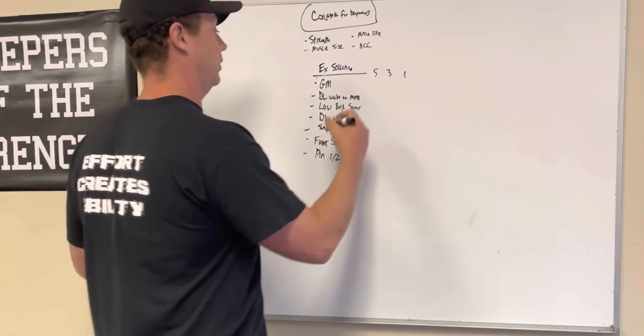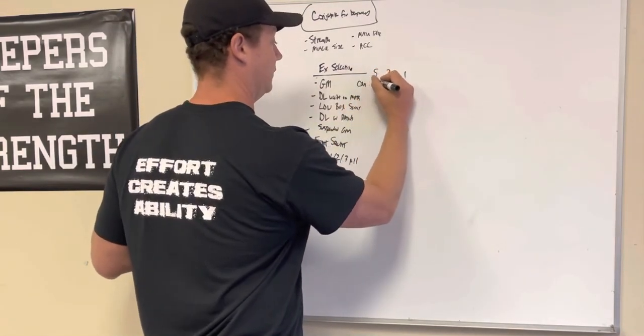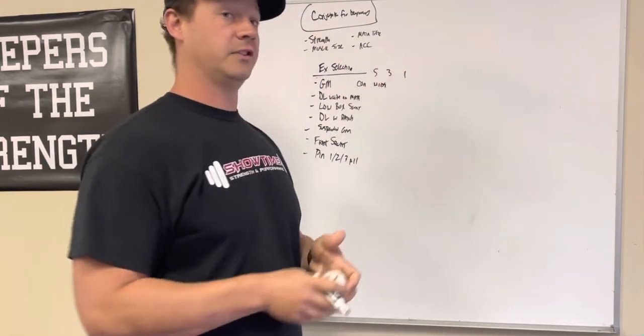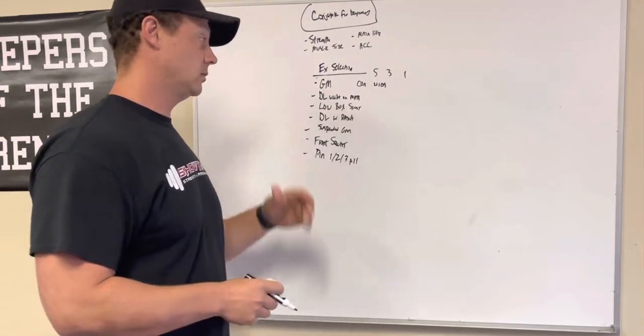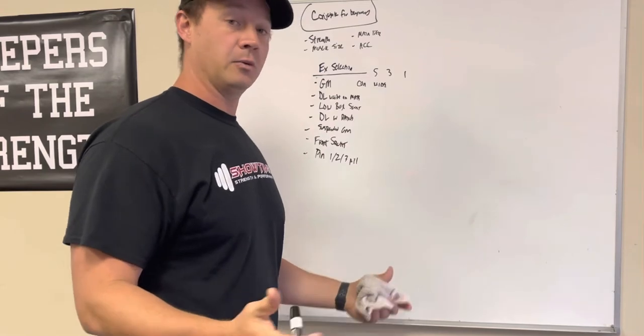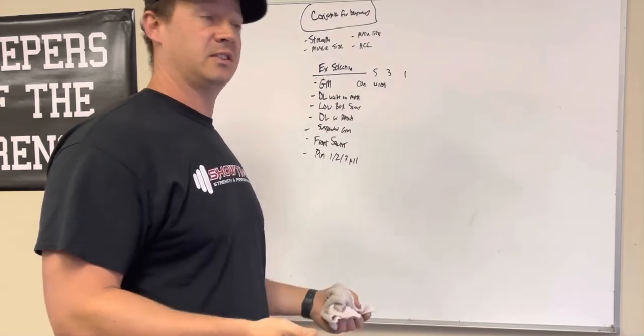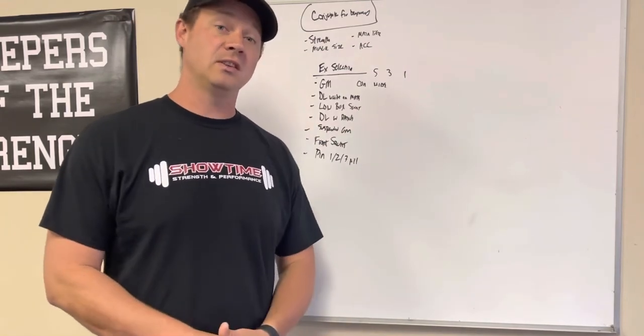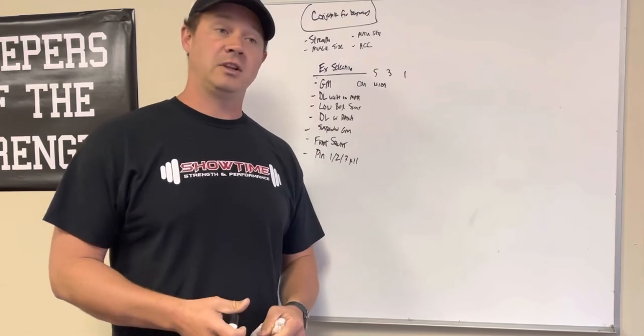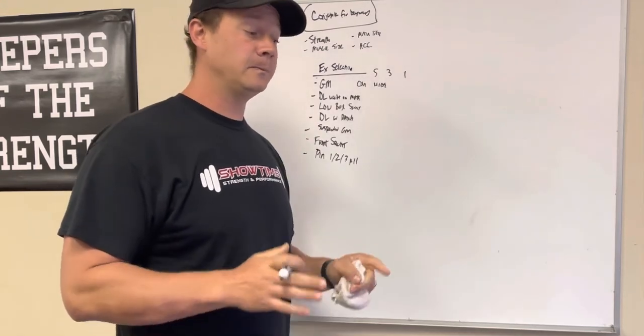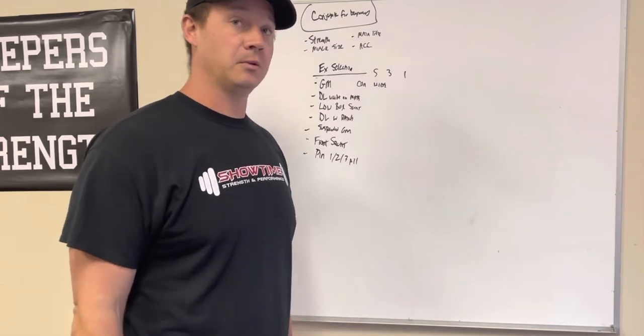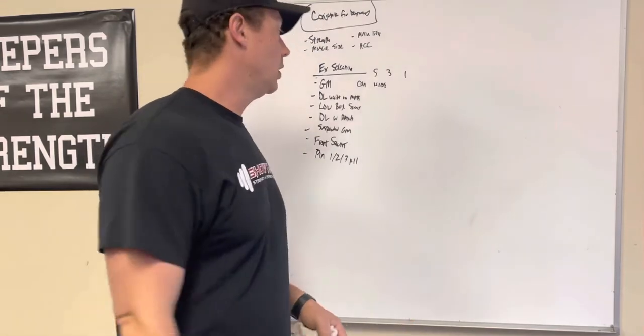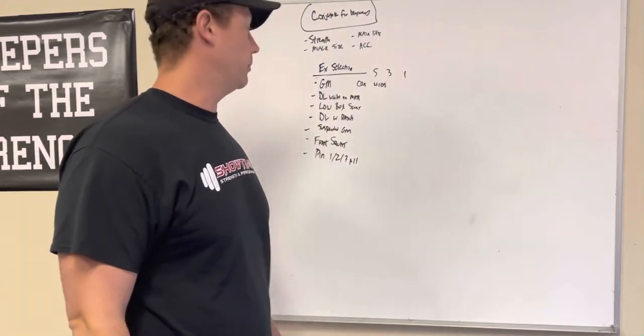But same thing with the good mornings. Maybe we go a conventional stance on our heavy sets, and then go wide for some rep sets as a back off. Deadlift, pull sumo for your work sets, and then maybe do a couple sets with your stance in conventional. And what that's doing is it's building different muscles, eliminating any weaknesses. When I was at my strongest, my deadlift, and I know this was true for many of the guys I train with, many of our deadlifts were within 50 pounds of one another. It wasn't like we couldn't do one or the other. We try to be strong at every movement possible.